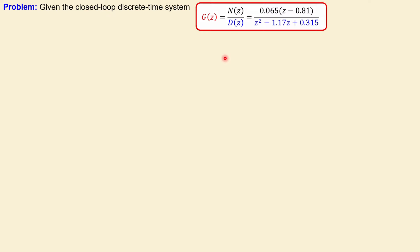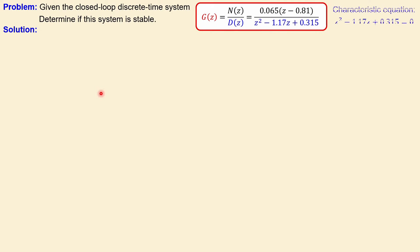For this case we have a closed-loop discrete time transfer function, with the numerator and denominator given here in blue. This is a second order system — we have one zero at 0.81 and two poles given by the denominator expression when equated to zero. The question is: determine if this system is stable.